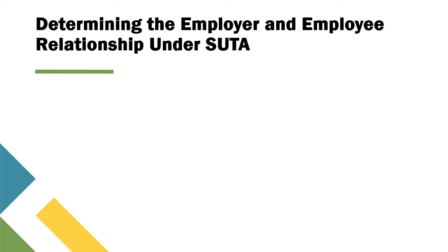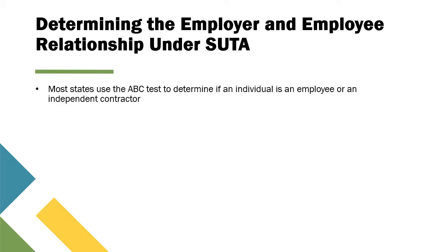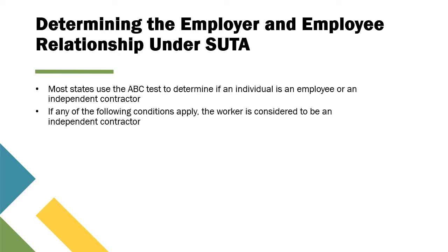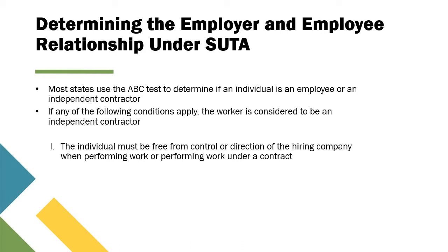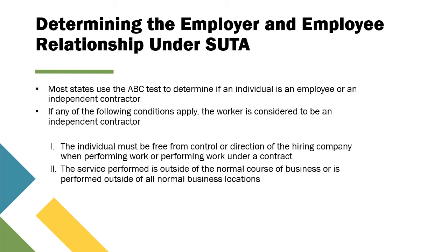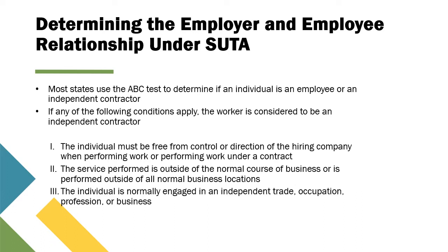Most states use the ABC test to determine if an individual is an employee or an independent contractor. If any of the following conditions apply, the worker is considered an independent contractor: the individual must be free from control or direction of the hiring company when performing work; the service performed is outside the normal course of business or performed outside all normal business locations; or the individual is normally engaged in an independent trade, occupation, profession, or business.